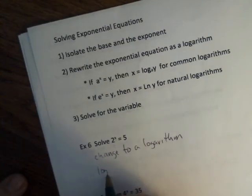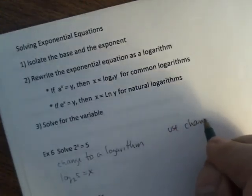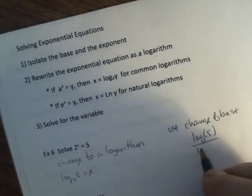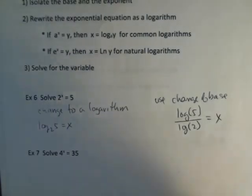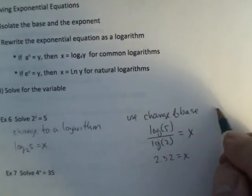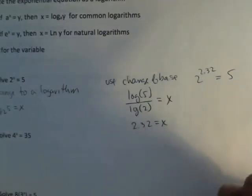So, log base 2 of 5 is your x. Then I'm going to use my change of base to have log 5 over log 2 equals x. Put that into my calculator. And I get 2.32 equals my x. And remember, you can check these very quickly. Take 2 to the 2.32 power and you should get about 5.